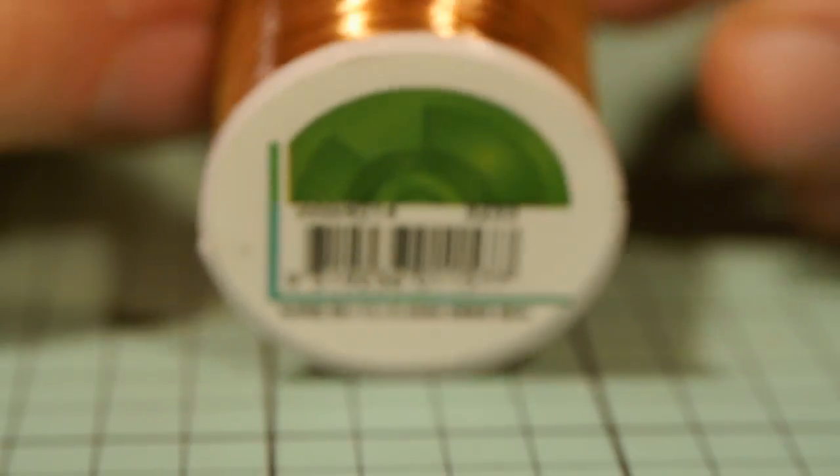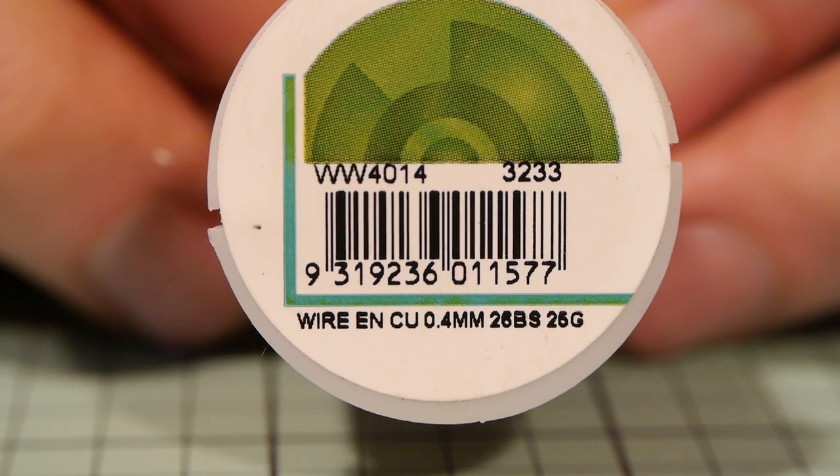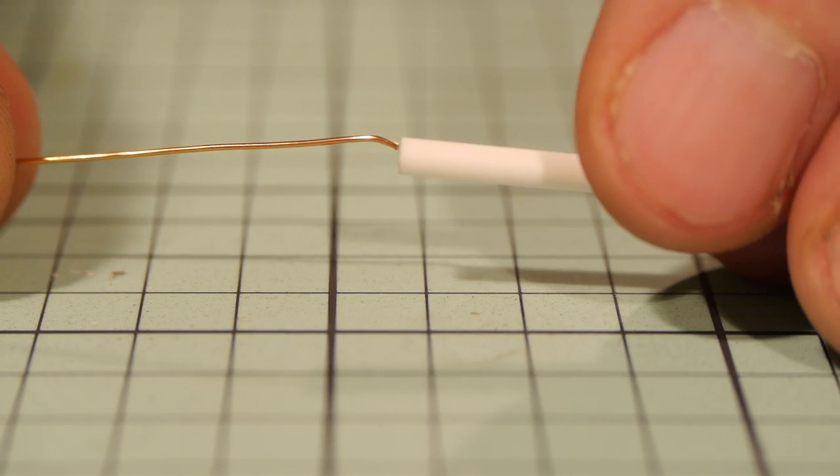This wire is 0.4mm insulated wire. You will need a small bend at the end so it pushes out through the hole at the top. It can be difficult but with a little bit of patience and some trial and error you should get it.